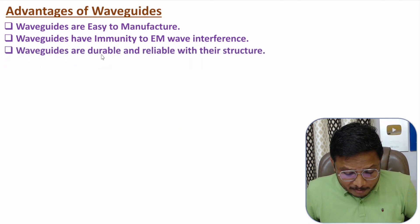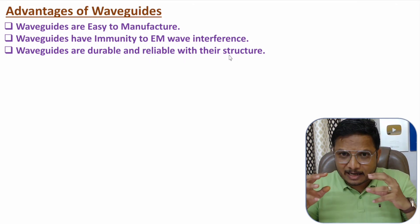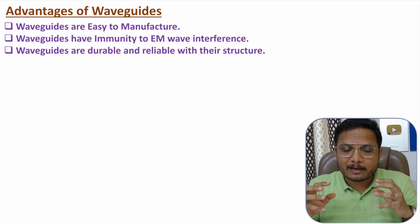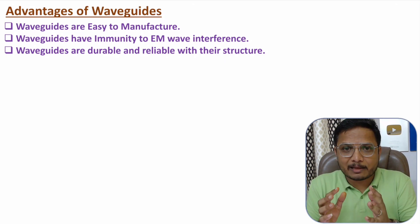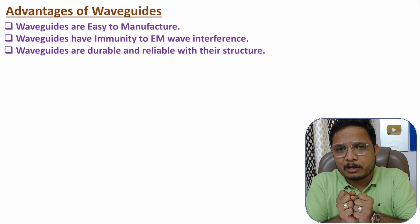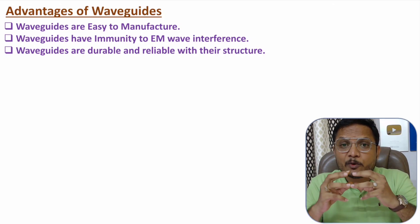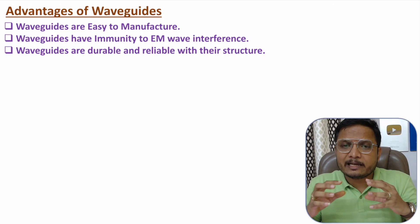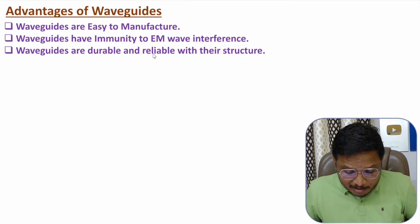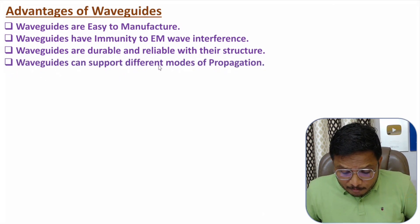Waveguides are durable and reliable due to their structure. As shown, the basic structure is made up of metal, so it is durable. With a transmission line there is a possibility of cable bending, but with a waveguide it is rigid in structure because it is made up of metal. So waveguides are durable and reliable.